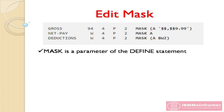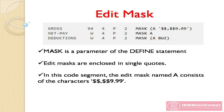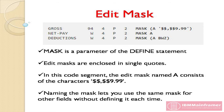Mask is a parameter of the define statement that indicates that an edit mask follows. Edit masks are enclosed in single quotes. In this code segment, the edit mask named A consists of the characters: '$$$,$$$9.99'. Naming the mask lets you use the same mask for other fields without defining it each time. The gross field mask is named A, so this mask A is also used in the net pay field, making it easier to reuse the same mask without defining it each time.